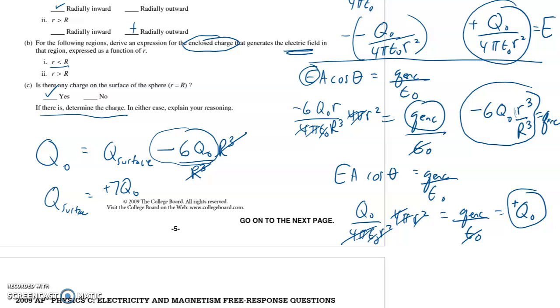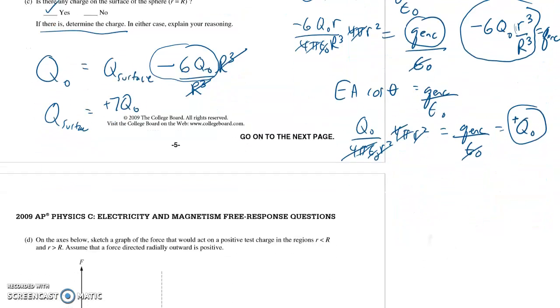And hopefully that makes sense in a logical way too. If you have positive seven q_0 on the surface and then you subtract from that six q_0, which would be at a radius of capital R, then you get q_0, which is the charge that we figured out is the enclosed charge when you're beyond capital R. Okay.